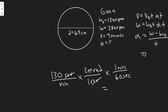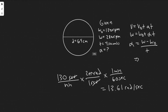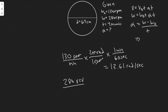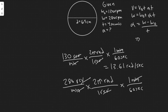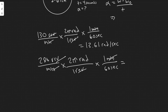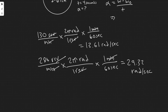For 130 rpm: multiply by 2π radians per revolution and divide by 60 seconds per minute. That gives 130 times 2π divided by 60, which equals 13.61 radians per second. For 280 rpm: same conversion — 280 times 2π divided by 60 gives 29.32 radians per second. Now we have both values in the correct units to plug in.